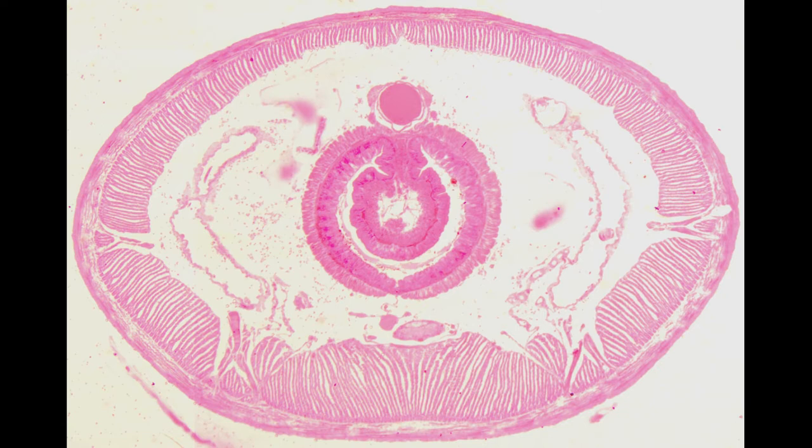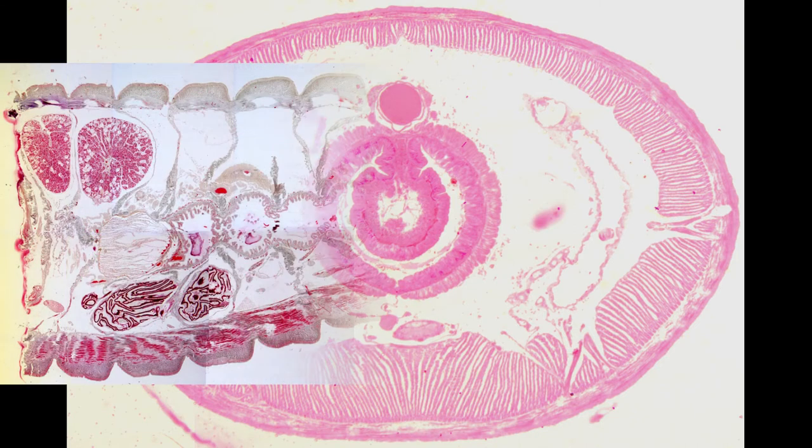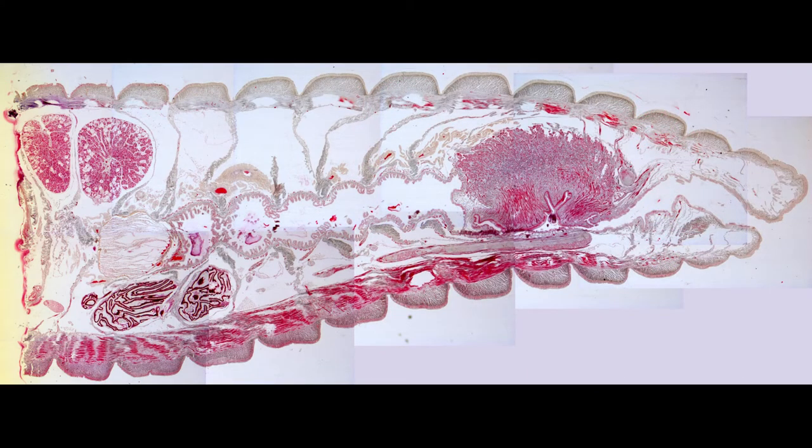Hello and welcome back to Down the Scope. In the last video we covered the basic units of earthworm anatomy that can be seen on a transverse section. Now I want to move on to talk about what we can see on the longitudinal section of an earthworm's head.